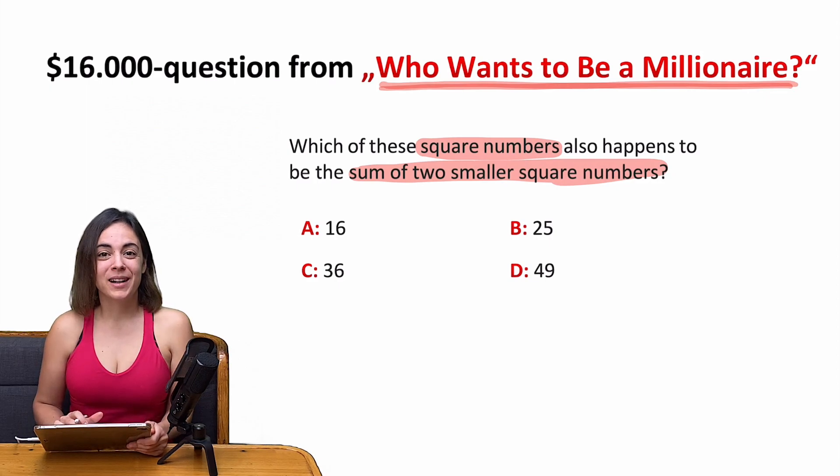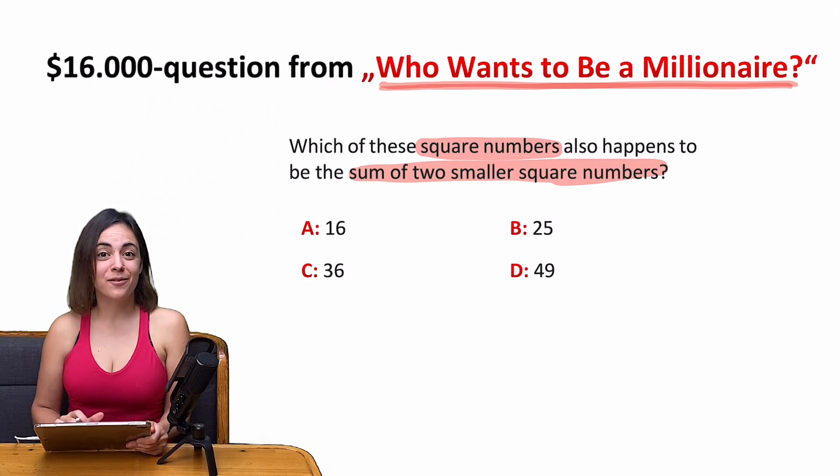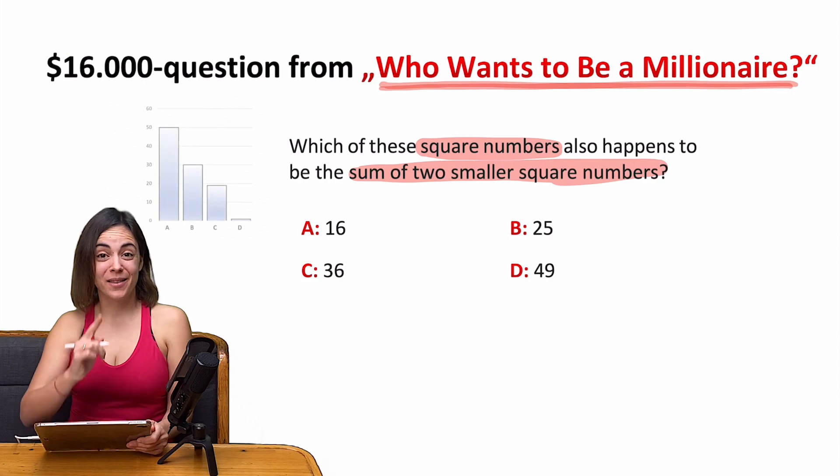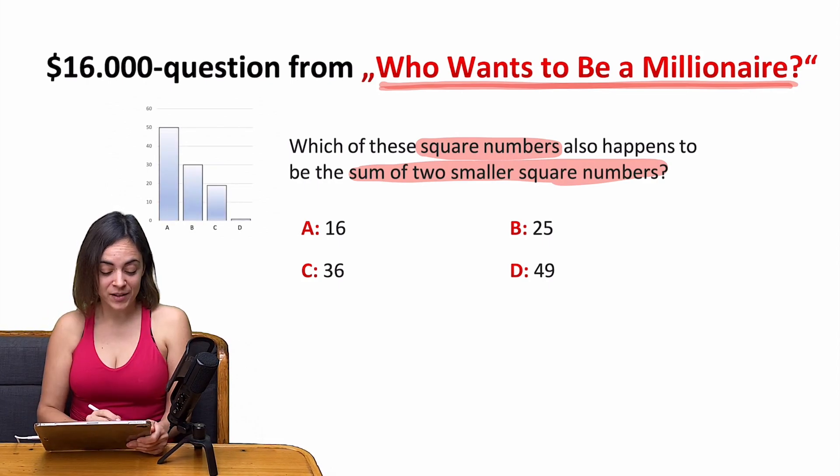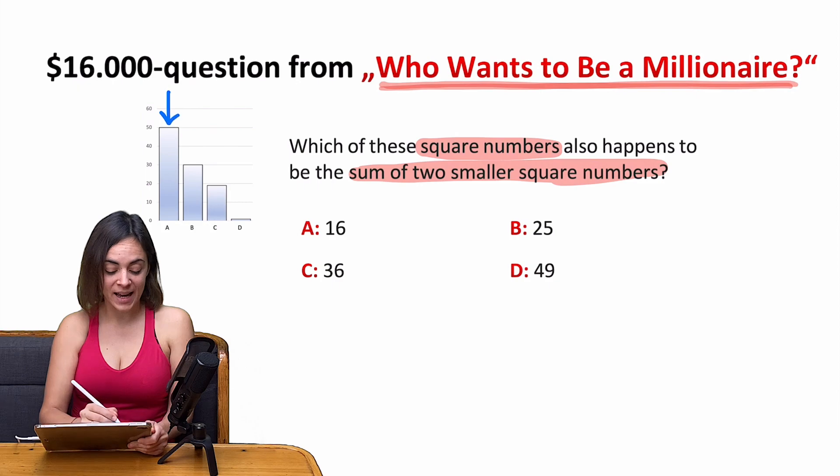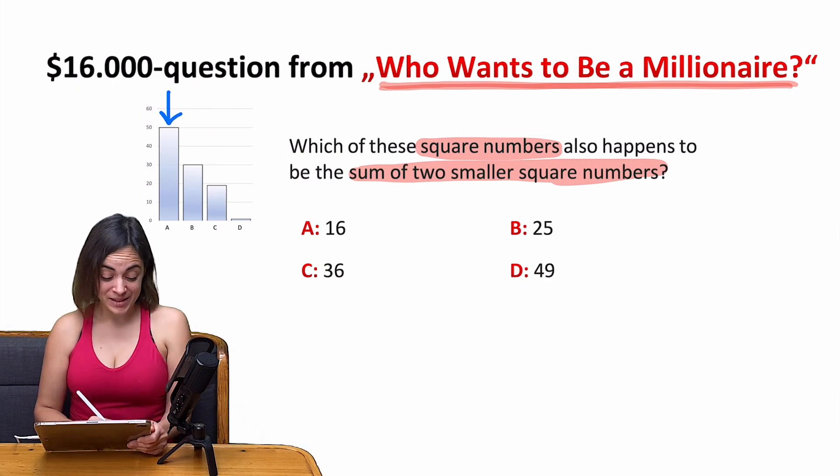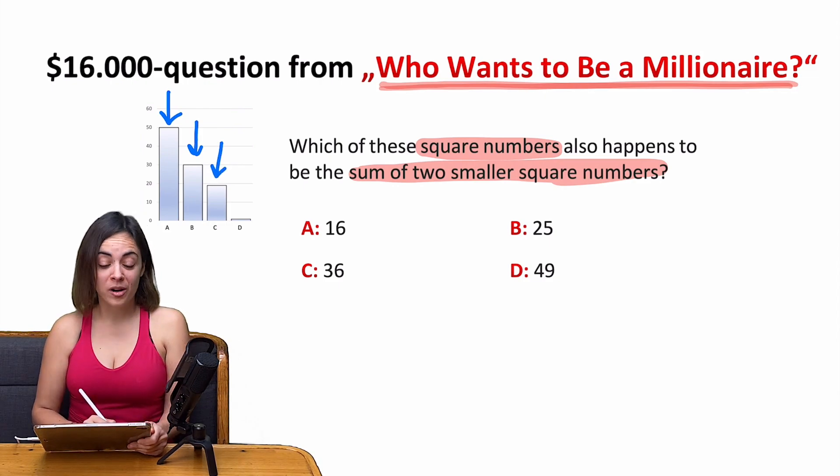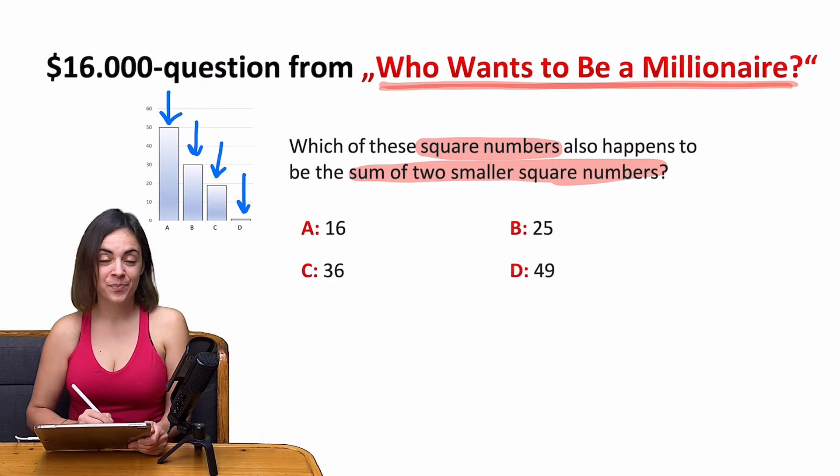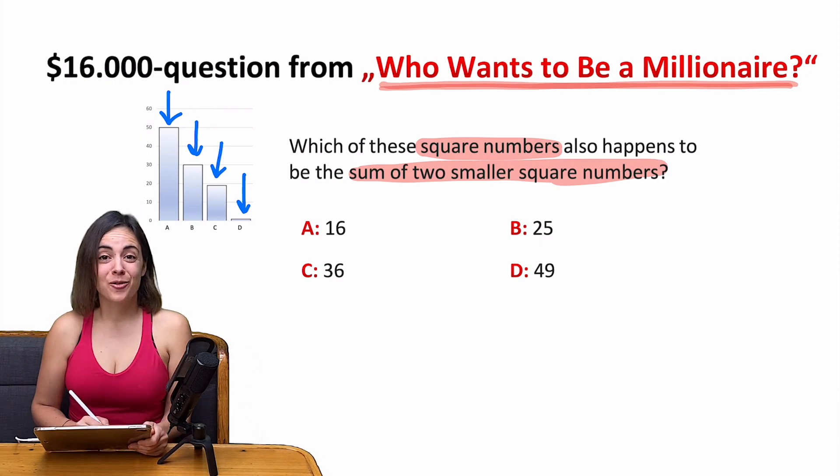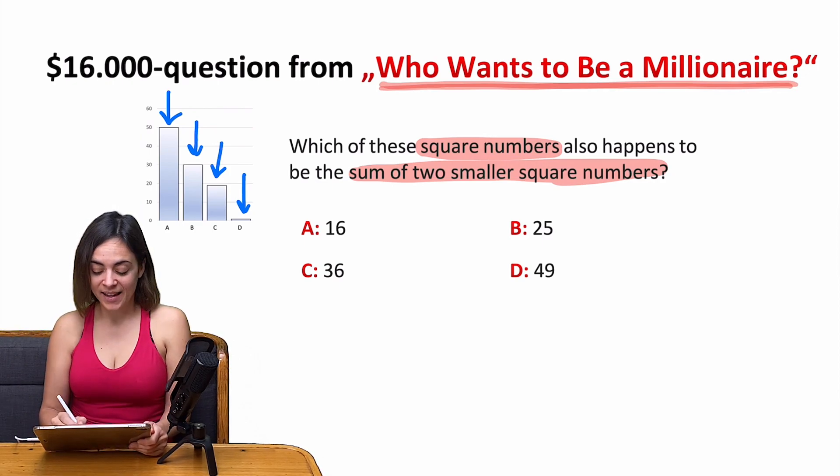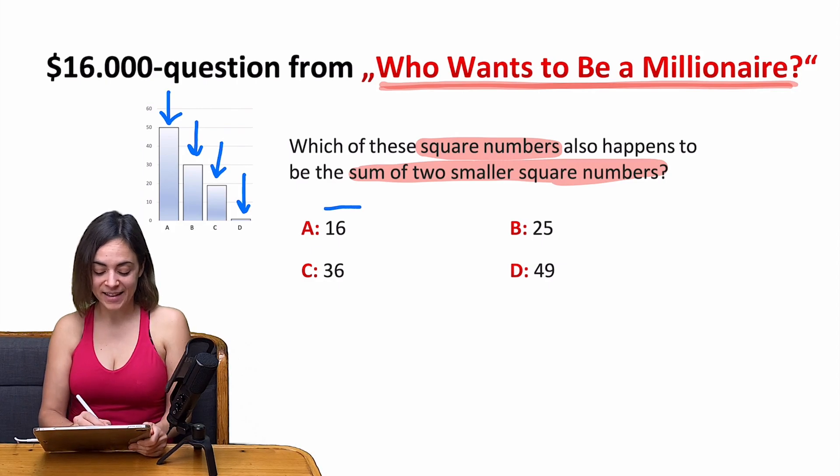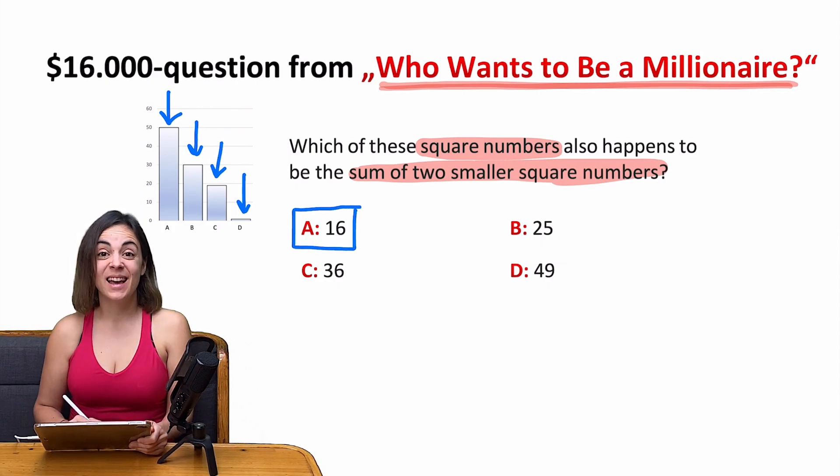And the poor guy on the chair didn't know the answer by himself unfortunately, so he asked in the studio. And the surprise was that the poll showed 50% went for A, 30% for B, 19% for C, and 1% for D. And of course what did he do? He trusted the audience. And he logged in A, 16, and lost.